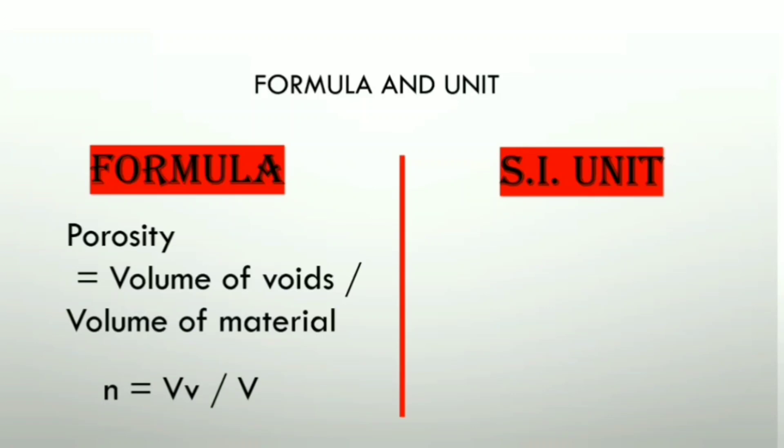to Vv by V. That is, volume of voids is abbreviated by Vv and volume of material is abbreviated by V. And as it is the ratio of volumes, it is unitless or we can say it is